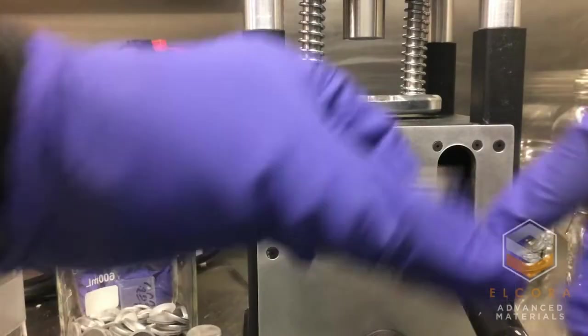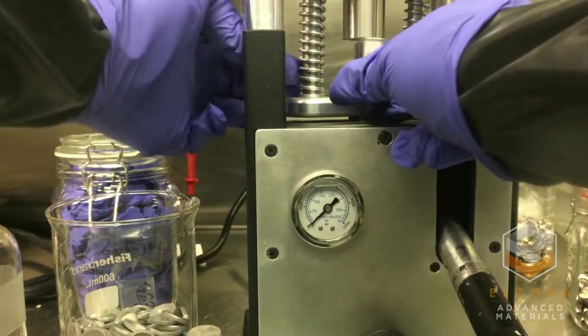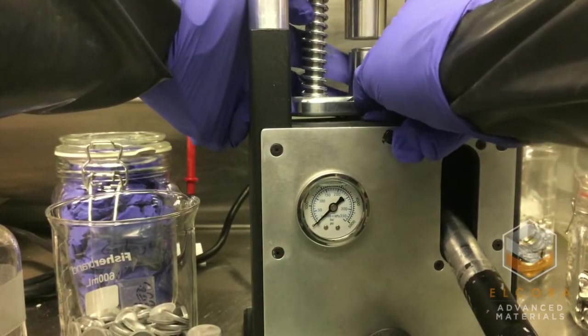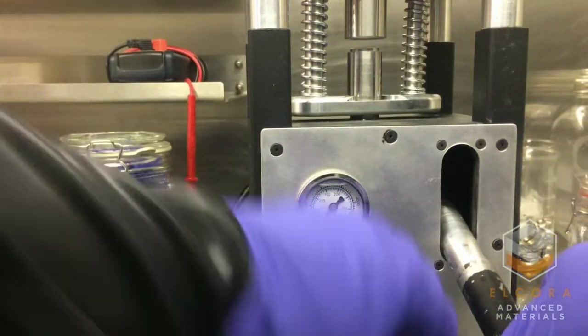To seal the cell, the die is placed on a crimper and a pressure of about 1500 psi is applied. The gasket that was on the cup keeps the two terminals of the cell electrically separated.